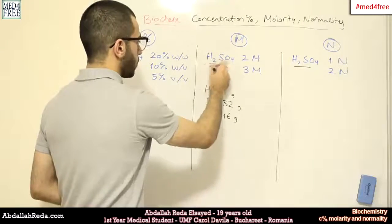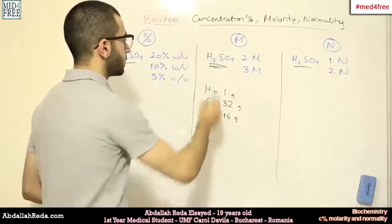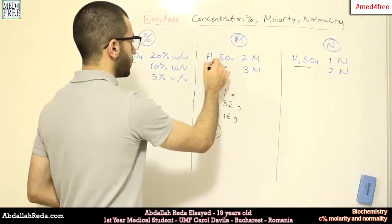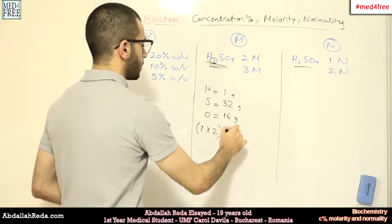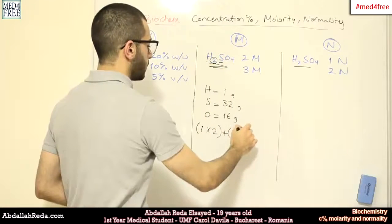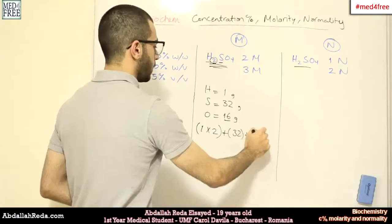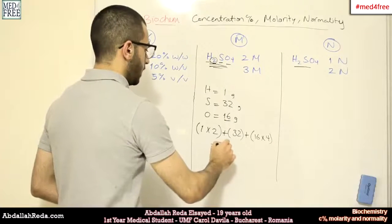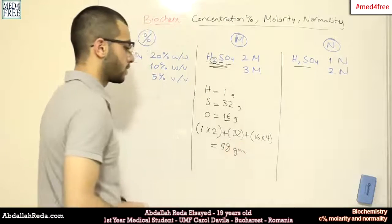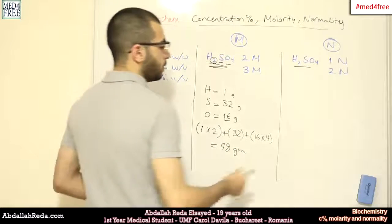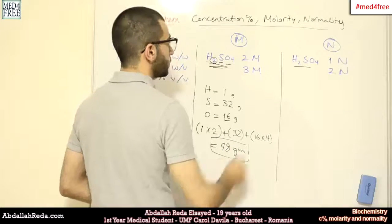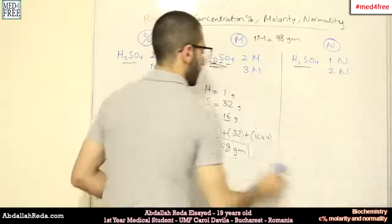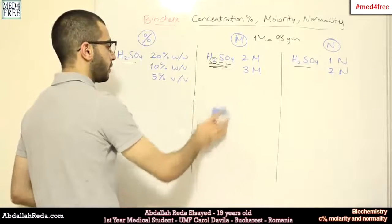So, the total molecular mass of sulfuric acid will be 1 multiplied by 2 - 1 hydrogen and 1 hydrogen, 2 of them - plus 1 sulfur and 16 multiplied by 4 because there are 4 oxygens. So, we get 98 grams. So, 1 mole of sulfuric acid weighs 98 grams. And this is the first thing that we need to know - how to calculate the molecular mass.